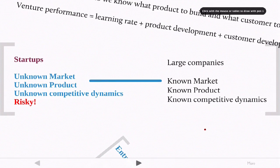This starts with understanding what the fundamental differences between startups and large companies are. For startups, they often operate in an environment where there is an unknown product, an unknown market, and unknown competitive dynamics. As you might imagine, this leads to a lot of risk. On the other hand, large companies typically operate in an environment where there's a known market, there's a set of customers they've already been selling to, there's a known product, and there are already known competitive dynamics.